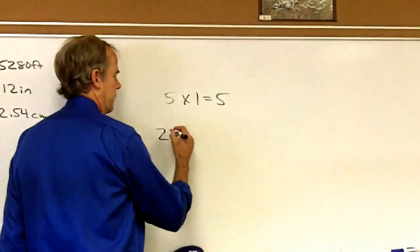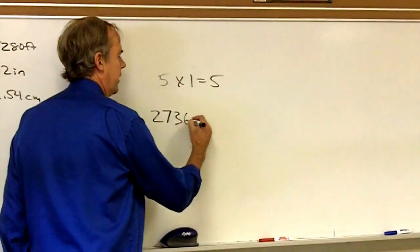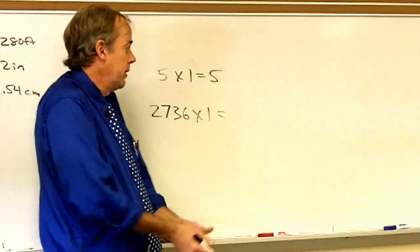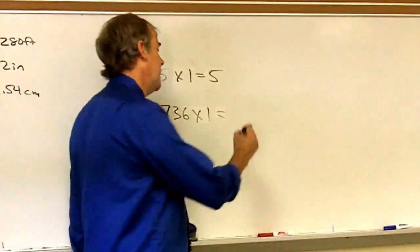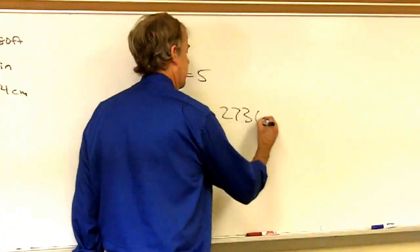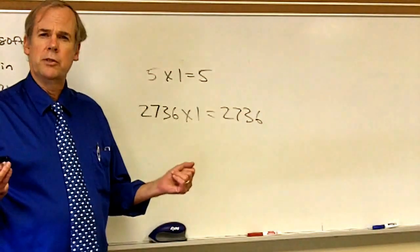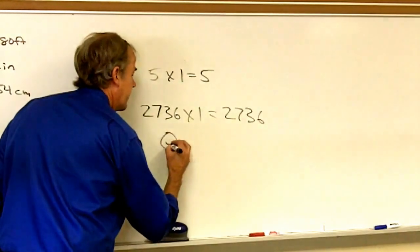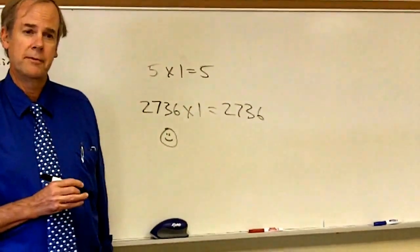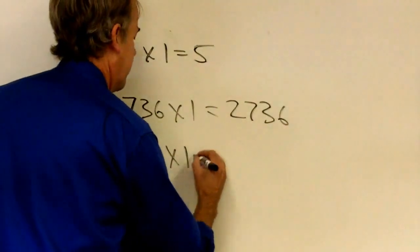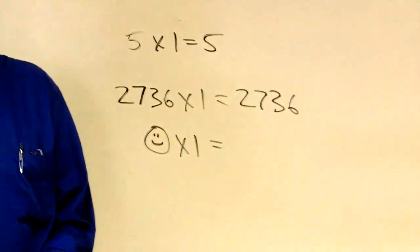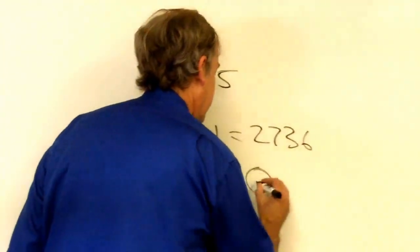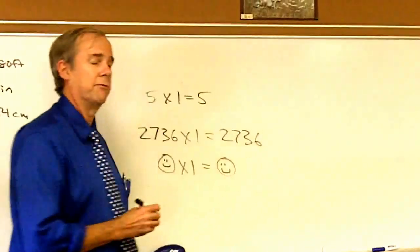A little less obvious is if I used a larger number and multiply it by 1, I'd get the same value. No confusion there. Neither should there be any confusion if I take a smiley face and multiply a smiley face times 1. A smiley face isn't a number, but it has value, and I should get the same value, a smiley face.